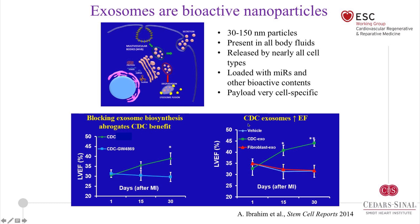Why do we focus on exosomes as mediators of CDC benefit? In a mouse model with left coronary ligation at day zero, vehicle-treated animals showed no improvement in left ventricular ejection fraction over one month. CDCs treated with GW4869 — a small molecule inhibitor of ceramide synthesis that blocks exosome secretion — also showed no benefit. But untreated CDCs did improve function over time. Blocking exosome biosynthesis eliminates CDC benefit. Conversely, exosomes from CDCs alone improved ejection fraction similarly to CDCs, while vehicle and fibroblast-derived exosomes had no benefit. So the right kind of exosome is required. This work was reported by Ahmed Ibrahim from my lab in 2014.